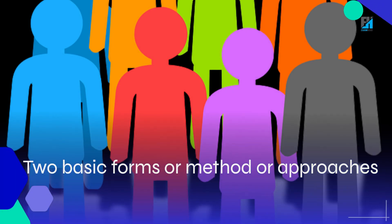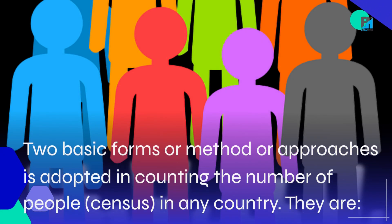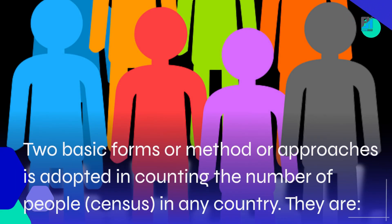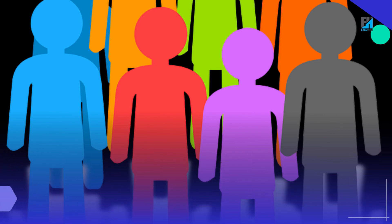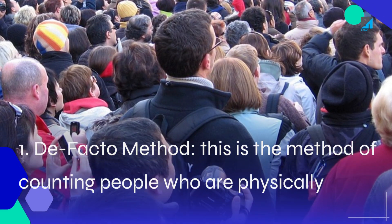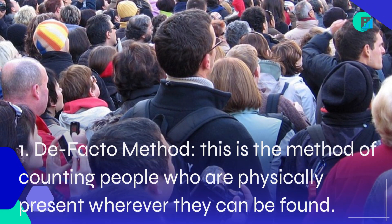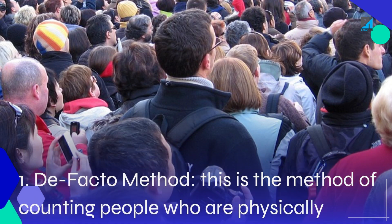Two basic forms or methods or approaches are adopted in counting the number of people in any country. They are: the de facto method — this is the method of counting people who are physically present wherever they can be found.